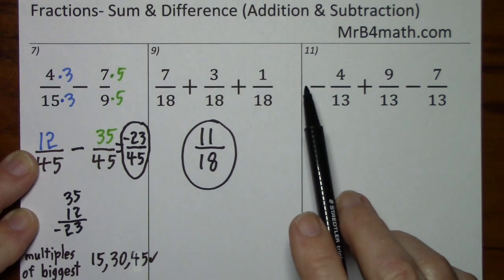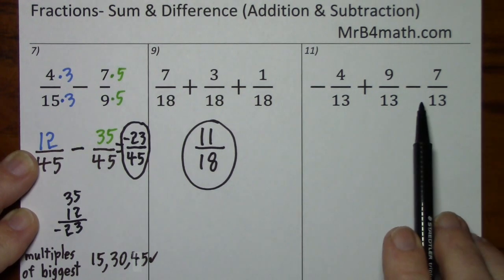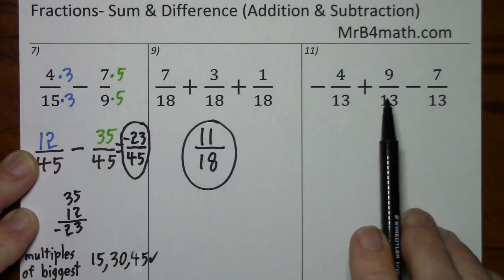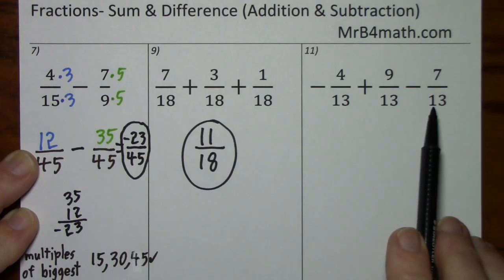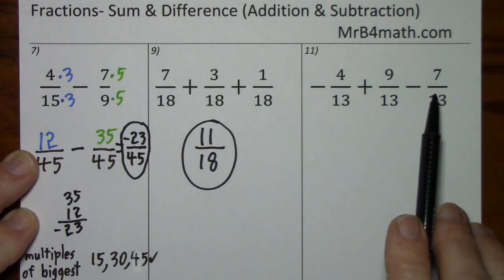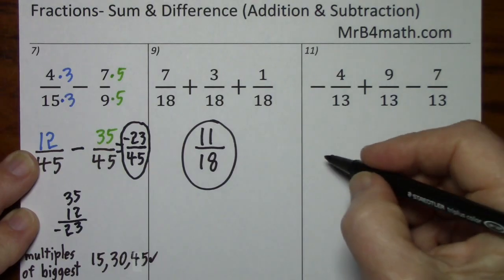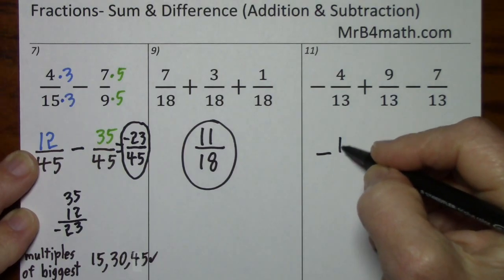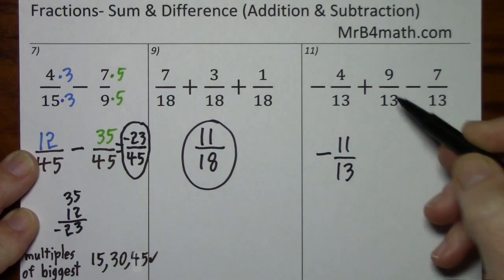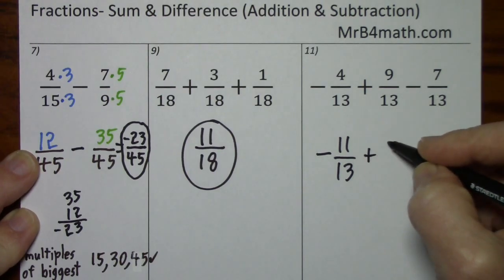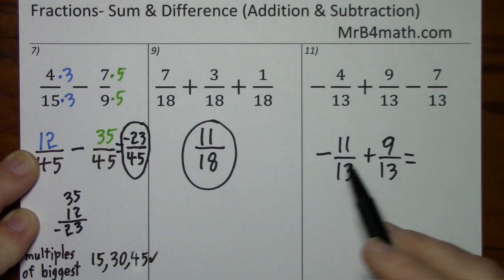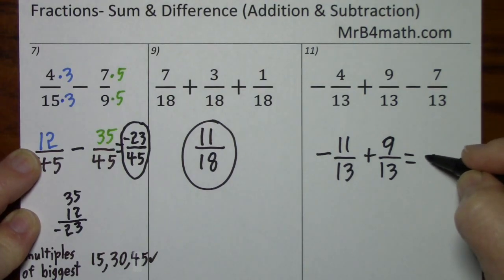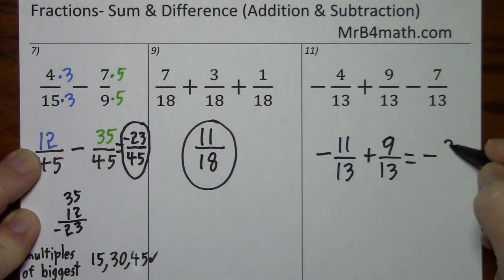Looking at number 11, we have common denominators, but two of the fractions are negative and one of them is positive. I'm going to combine the two negative fractions: negative 4 and negative 7 gives us negative 11. Bring down the 9 thirteenths. Signs are different — we'll subtract and keep the sign of the larger. So that's a negative 2 thirteenths.